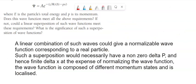But a linear combination of such waves could give a normalizable wave function corresponding to a real particle. That means ψ, the wave function, is equal to a1 times ψ1 of x comma t plus a2 times ψ2 x comma t.